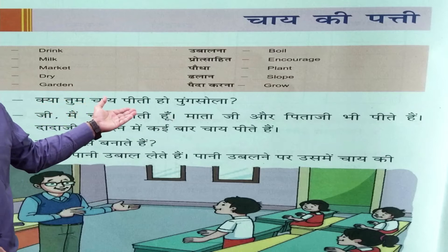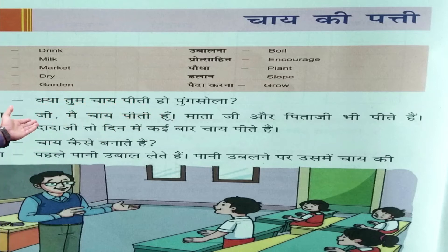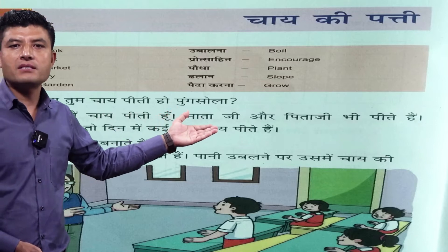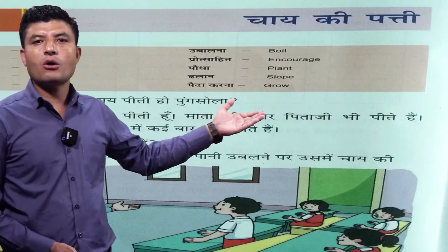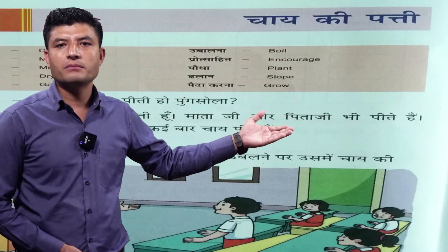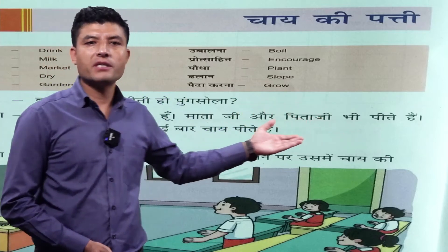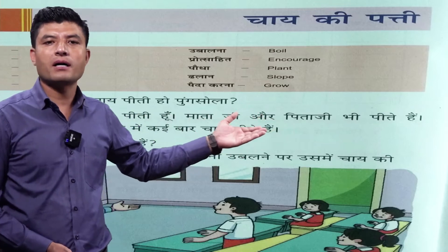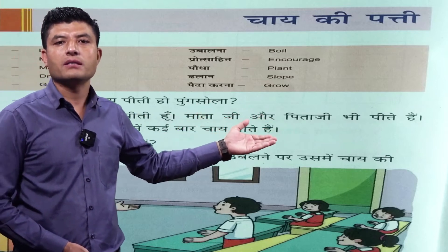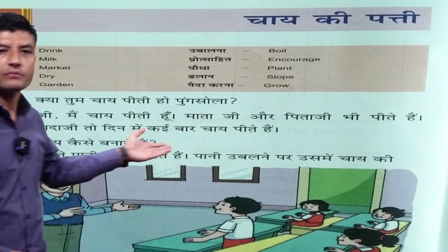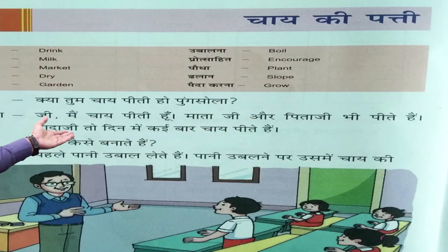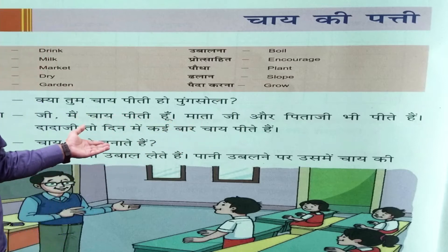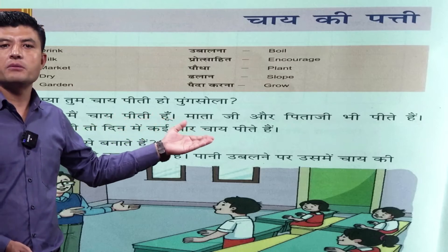Chai — tea — peeti ho Punsola? Toh Punsola kehti hai: 'Ji, main chai peeti hoon.' I drink tea. Mata ji — mata means mother — aur pita ji — pita means father — bhi peete hain. Main bhi chai peeti hoon, aur mata aur pita ji — my parents also drink tea. Dada ji — grandfather — toh din mein kayi baar, many times, chai peete hain. He takes tea many times a day.